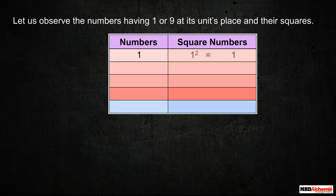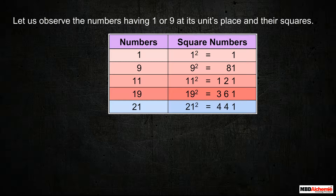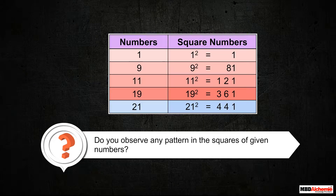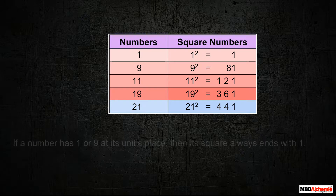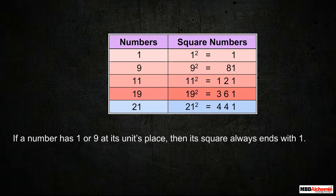Let us observe the numbers having 1 or 9 at their unit's place and their squares. Do you observe any pattern in the squares of given numbers? If a number has 1 or 9 at its unit's place, then its square always ends with 1.